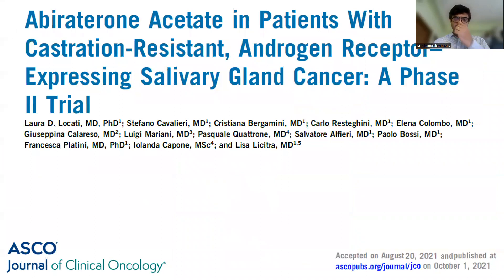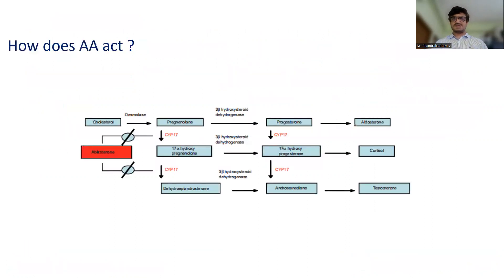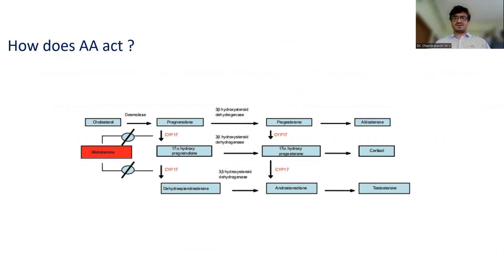The first study will be the role of abiraterone acetate in patients who have androgen receptor expressing salivary gland cancers who have progressed on prior androgen deprivation therapy. In any androgen receptor expressing cancer cell, the first thing we do is try to get the androgen levels down below normal — for example, castrate levels of testosterone less than 50.